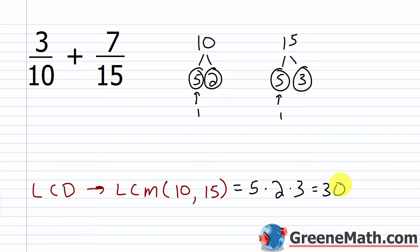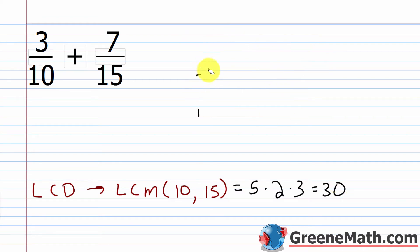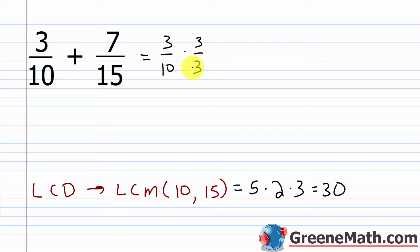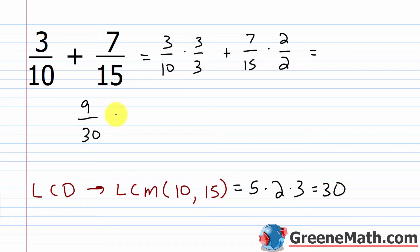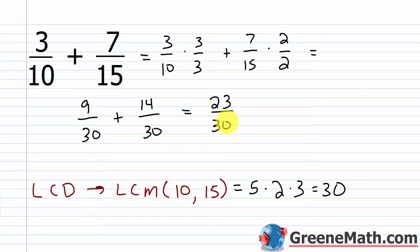Once I have found that, I rewrite each fraction as an equivalent fraction with 30 as the denominator. With three-tenths, I multiply numerator and denominator by 3 — I'm just multiplying by a complicated form of one, so I'm not changing the value. Then plus seven-fifteenths multiplied by 2 over 2. This equals 9 over 30 plus 14 over 30. Nine plus 14 is 23, so we end up with 23 over 30 as my answer, and that can't be simplified any further.